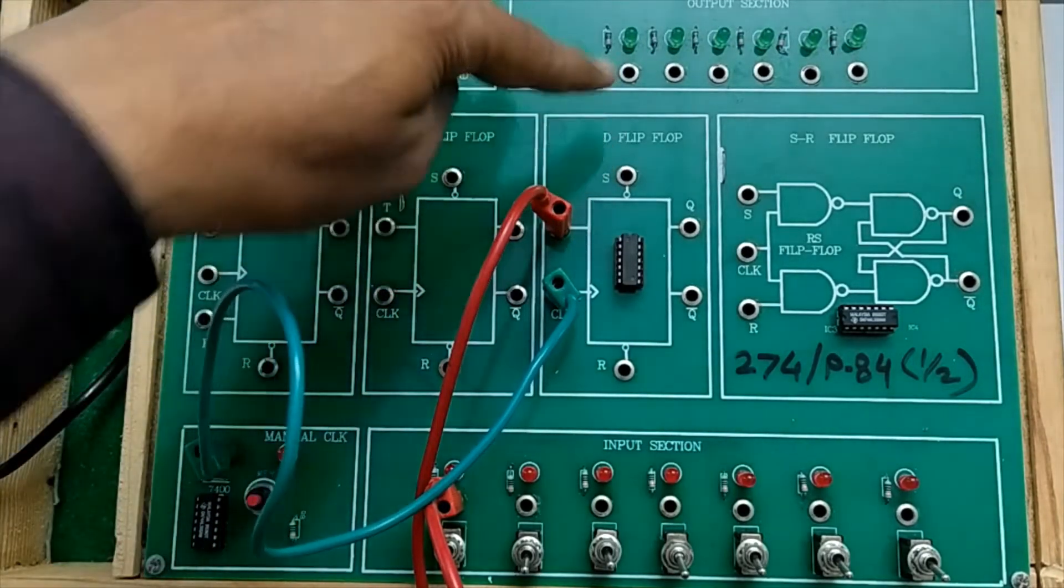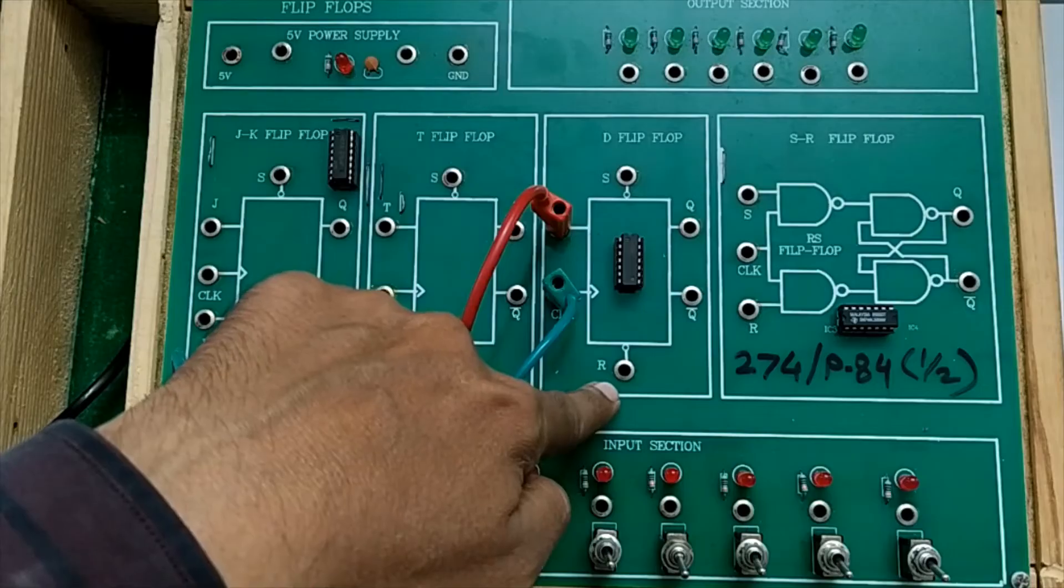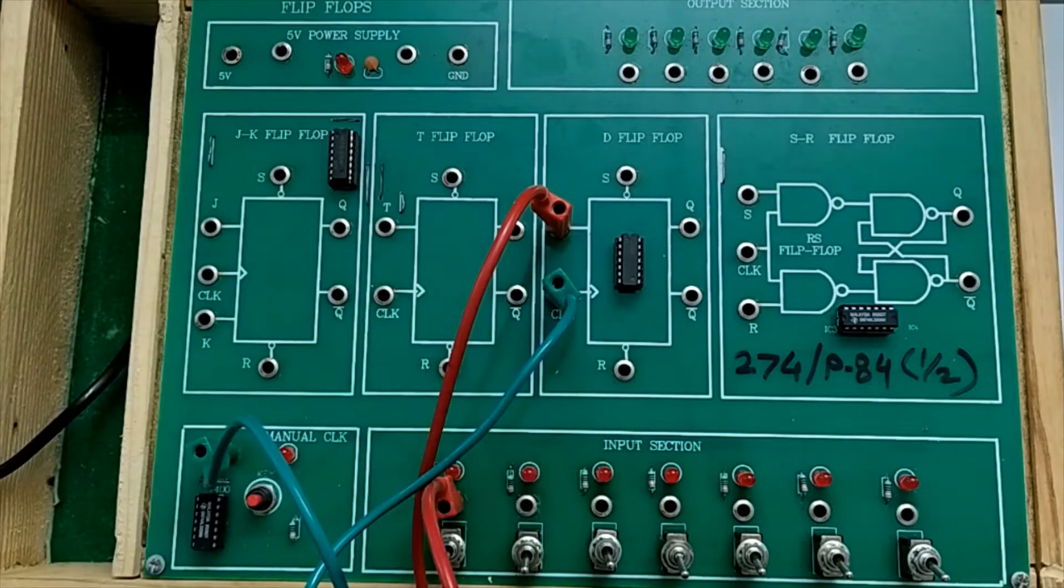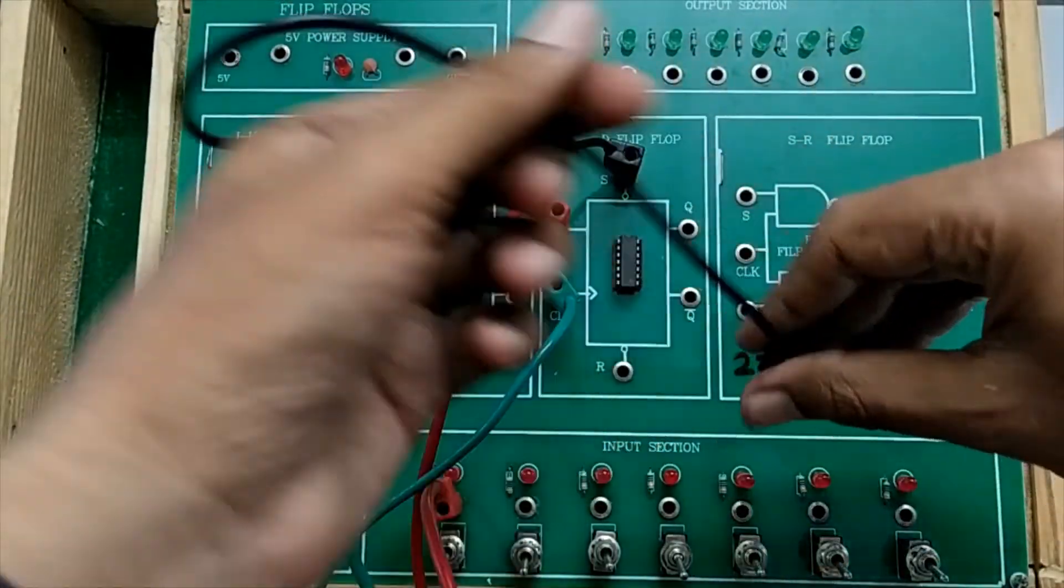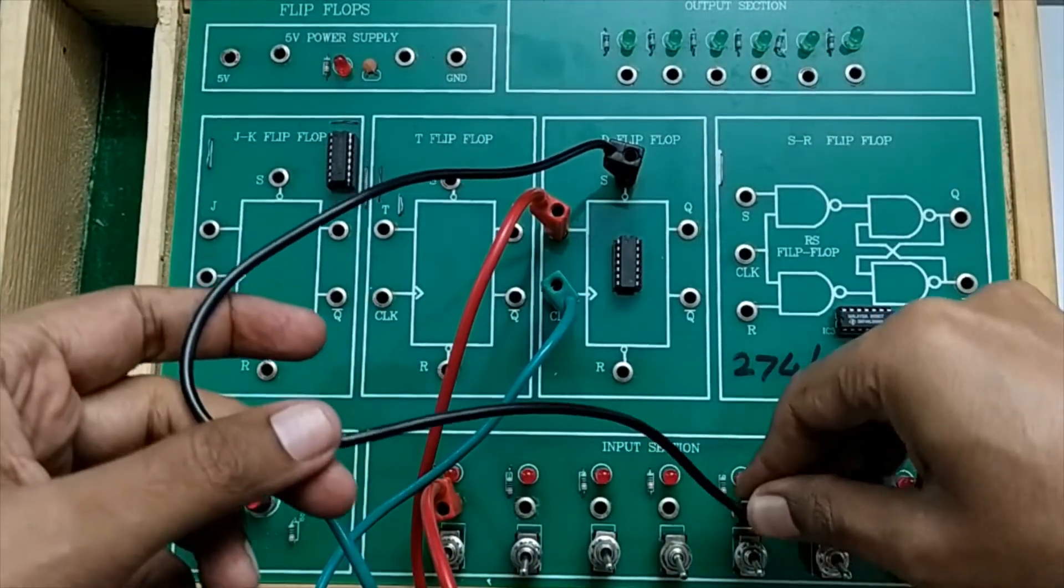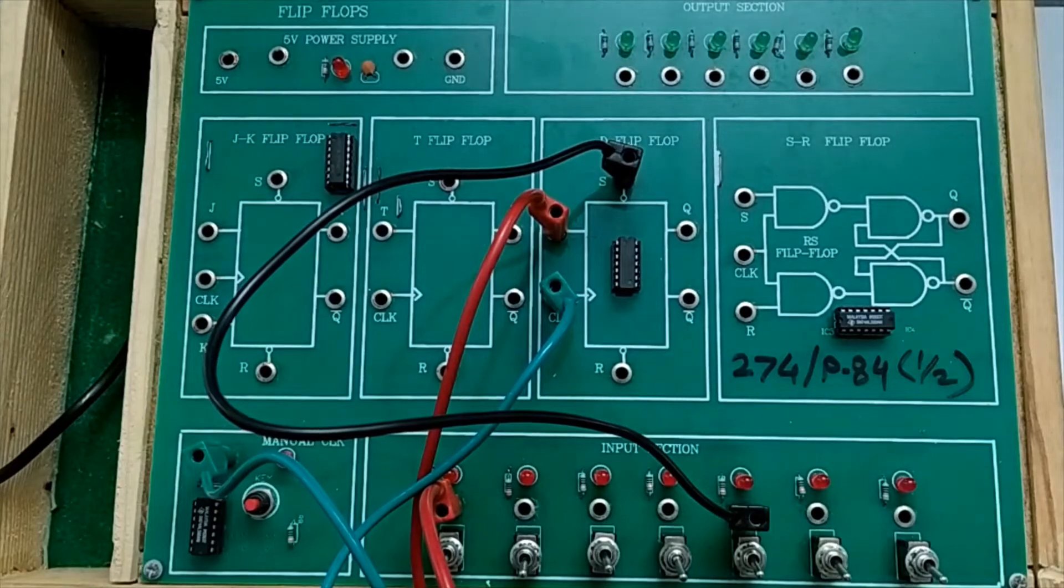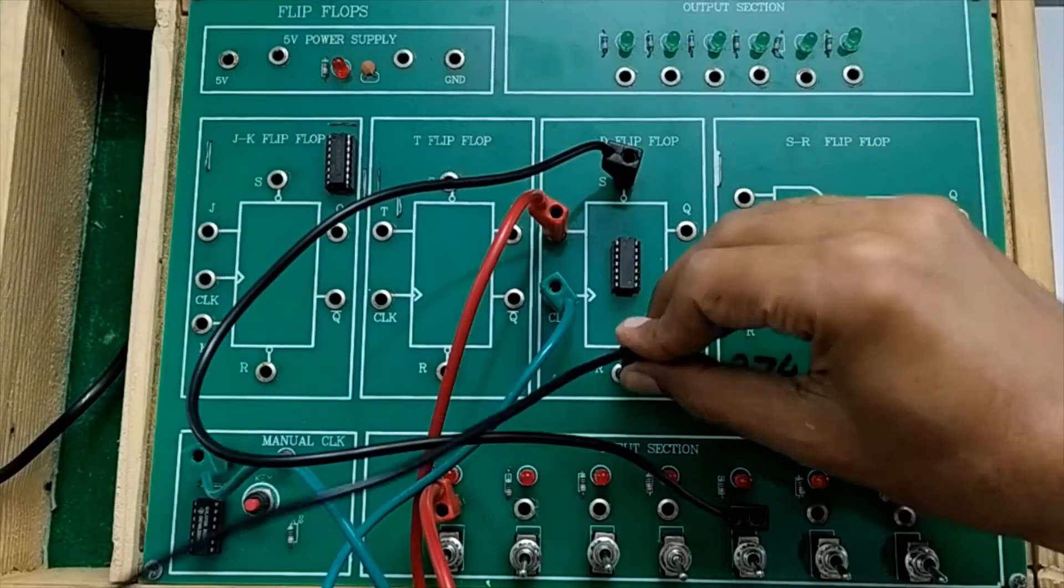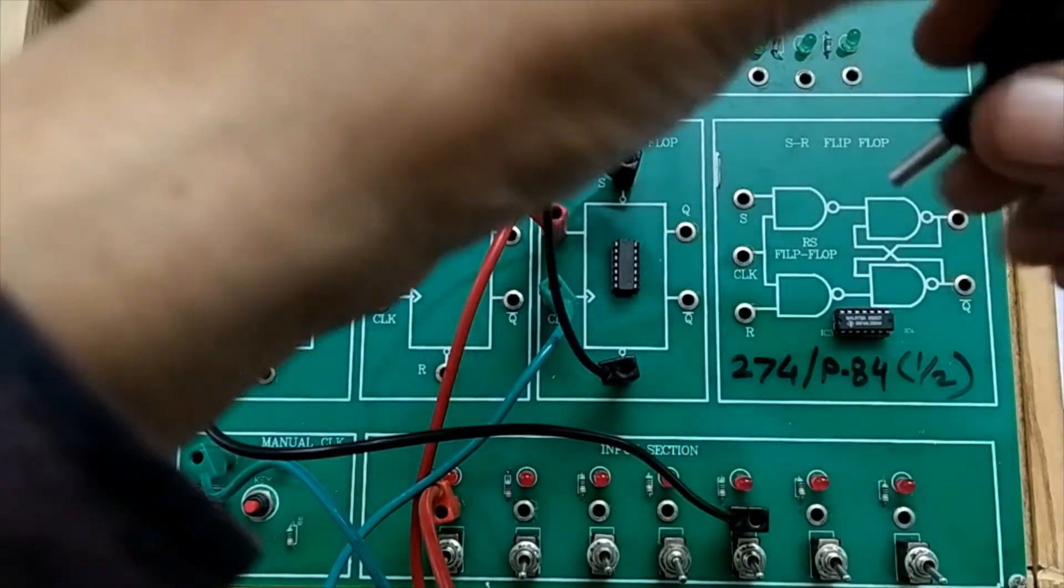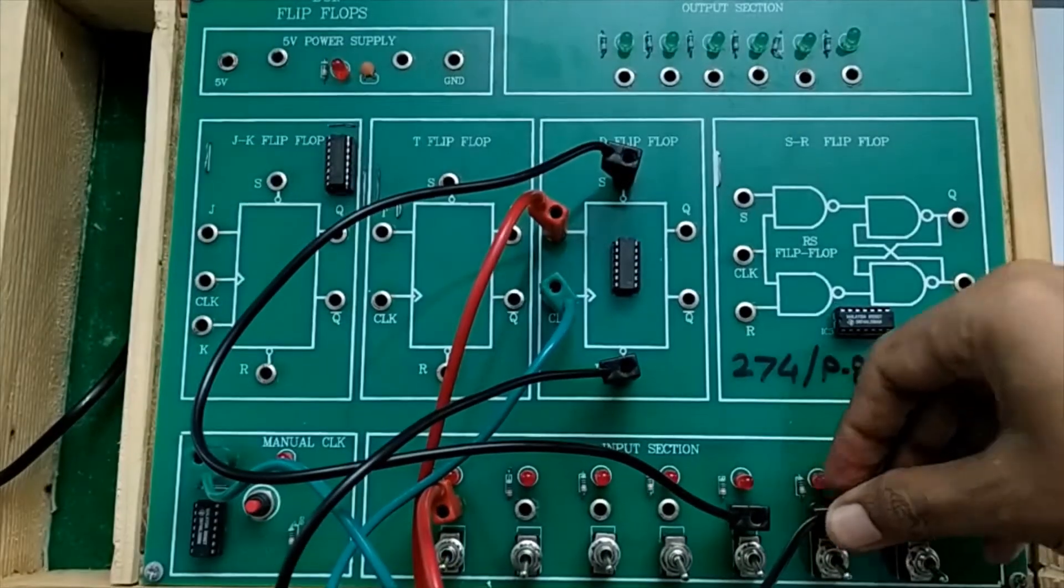S and R pins correspond to preset and clear operation. Let us connect the preset pin to one of the inputs. Similarly, the clear pin of IC 7474 is connected to another input.